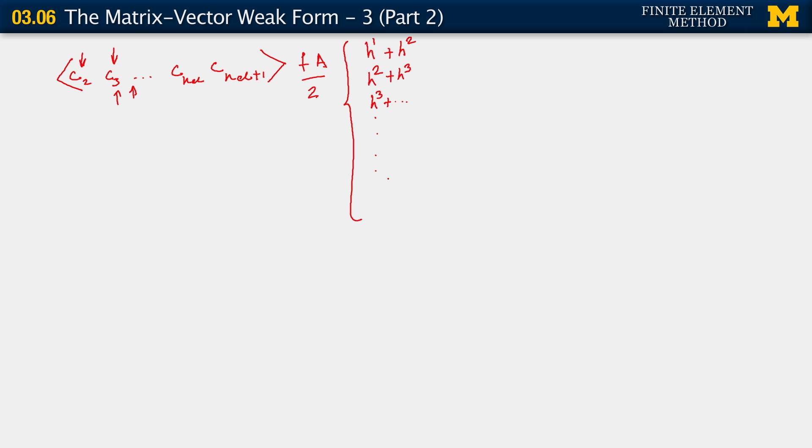The last but one entry will have a contribution corresponding to C NEL. But that would come from the last but one element. And so that contribution would be H NEL minus 1. That entry would also have a contribution from the very last element, H NEL. And the very last entry of the forcing function of this vector that we are trying to develop would have a contribution only from the very last element corresponding to that degree of freedom. That would also be H NEL.